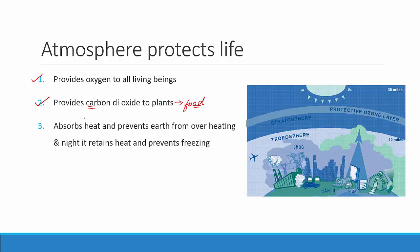Another very important point is that the atmosphere absorbs heat and prevents the earth from overheating during the day. So during the day when the sun is really hot, it absorbs all the heat. Whereas at night, it retains heat — that means it holds in all the heat and prevents the earth from freezing.